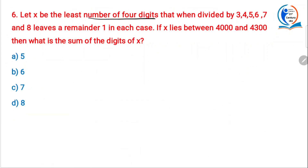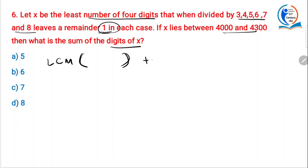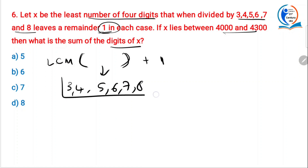Let x be the least number of 4 digits that when divided by 3, 4, 5, 6, 7 and 8 leaves remainder 1 in each case. If x lies between 4000 and 4300, what is the sum of the digits of x? They are asking for a number that leaves remainder 1 in each case, meaning LCM of all these numbers plus 1. First find the LCM of 3, 4, 5, 6, 7 and 8.